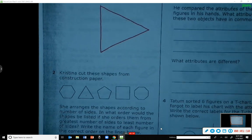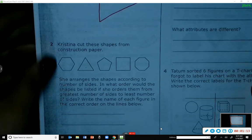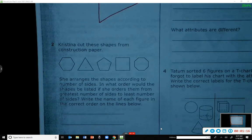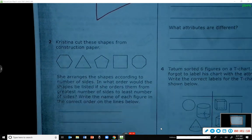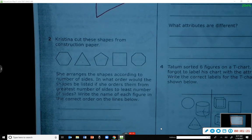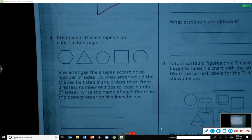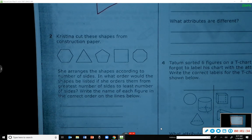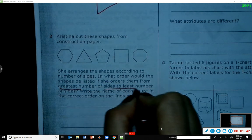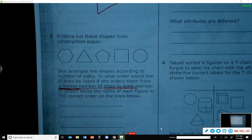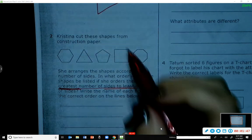Number two: Christina cut these shapes from construction paper. She arranges the shapes according to the number of sides. In what order would the shapes be listed if she orders them from greatest number of sides to least number of sides? Write the name of each figure in the correct order. So what order are we going in? Greatest to least.